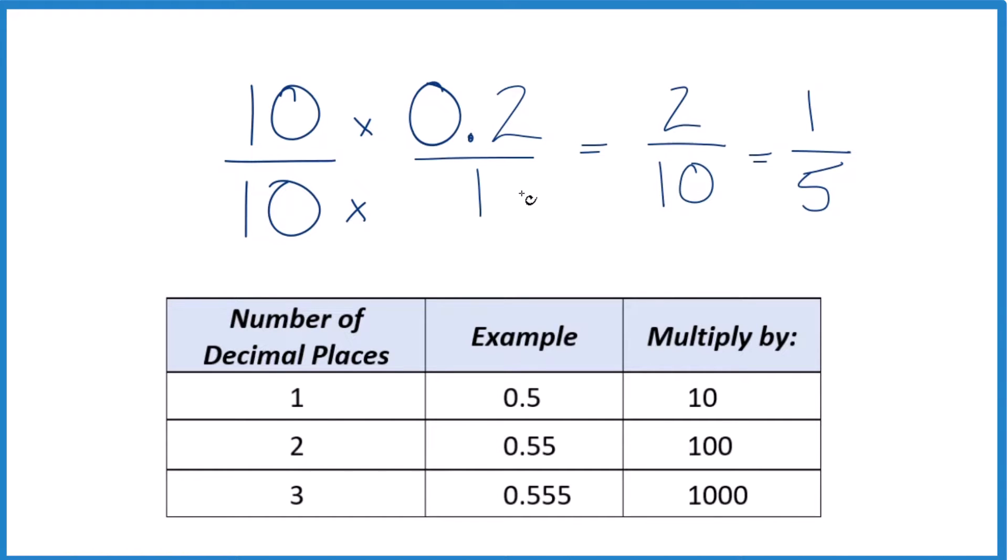So in answer to our question, the decimal 0.20 as a fraction is 2 tenths, or if you simplify that down to lowest terms, 1 fifth.